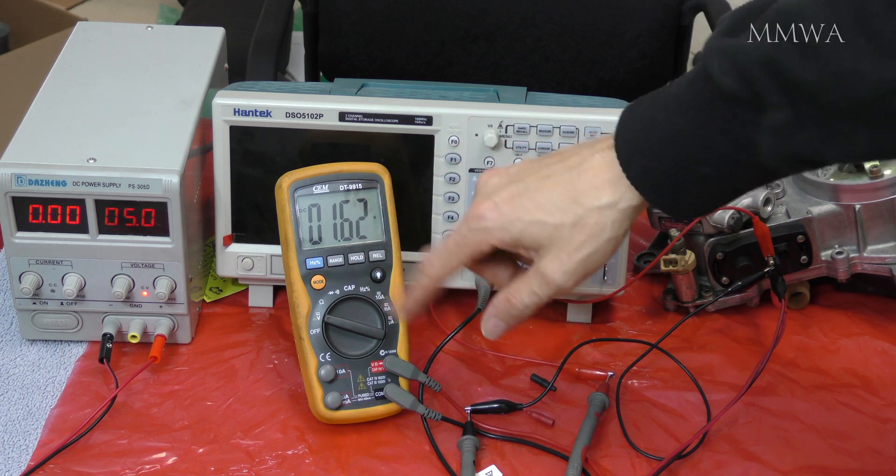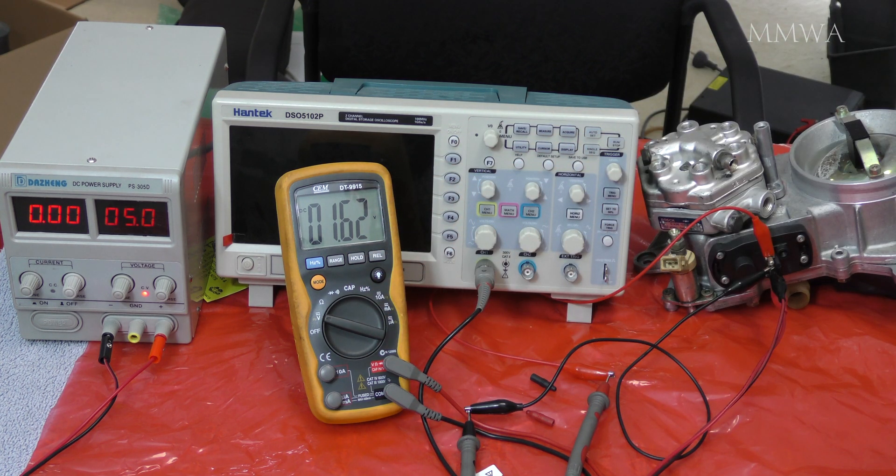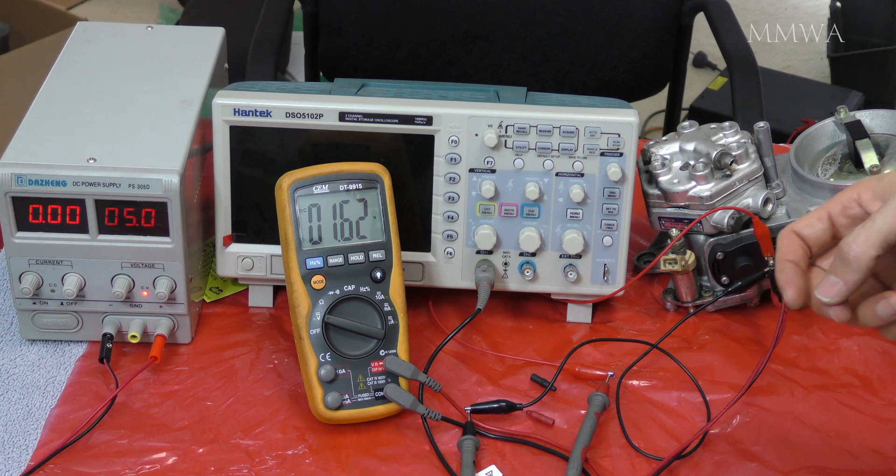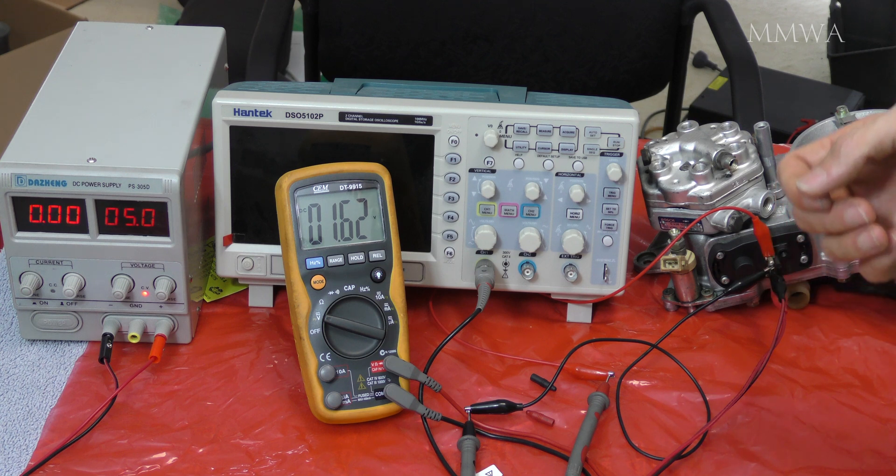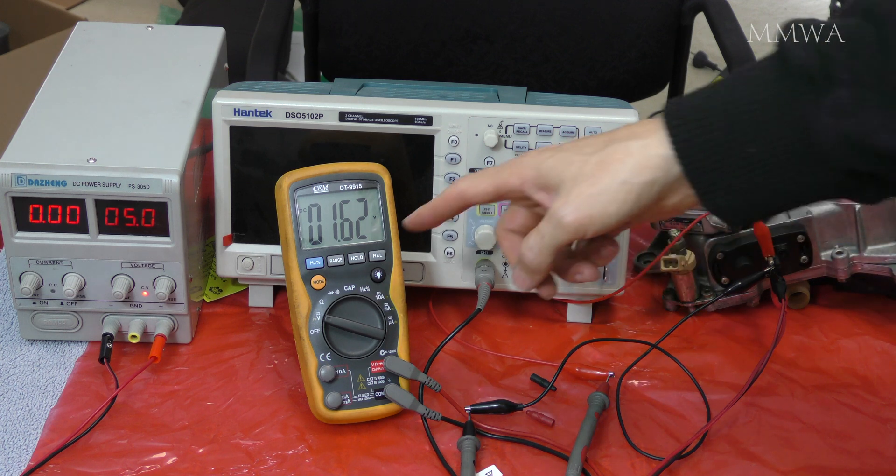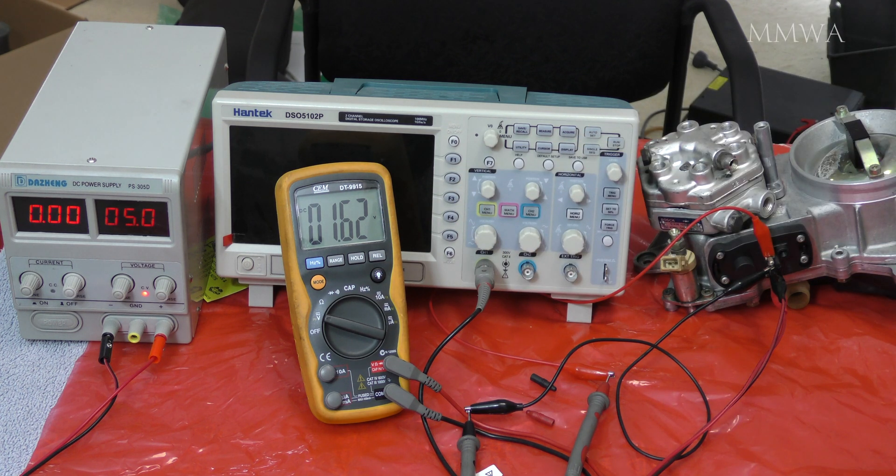Now this meter doesn't have the choice to select off or on time. MB refers to the duty cycle as the off time, which is the complete opposite of what most multimeters will display.